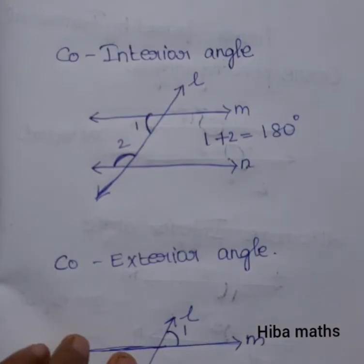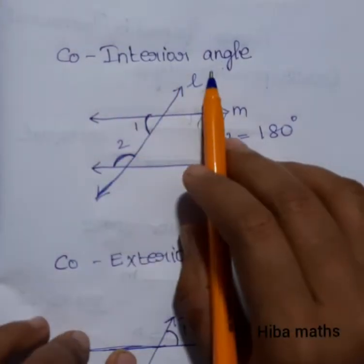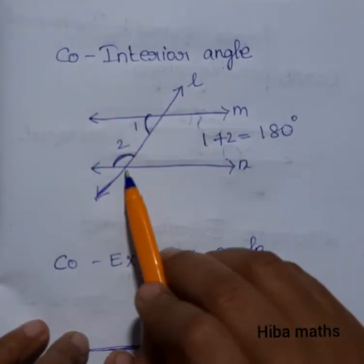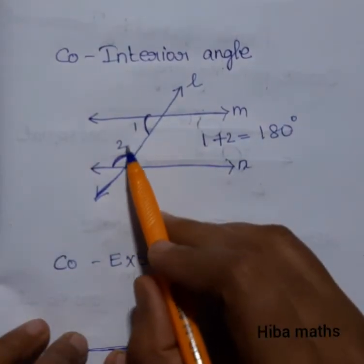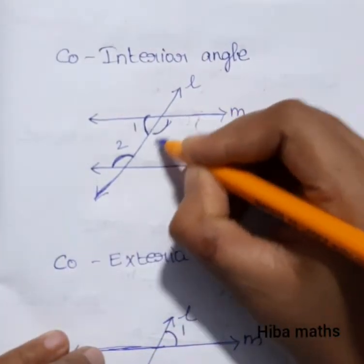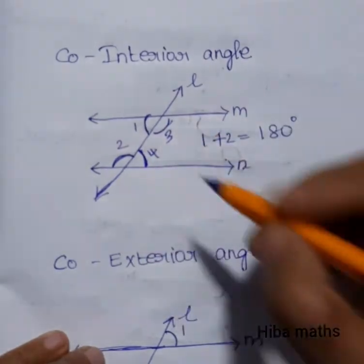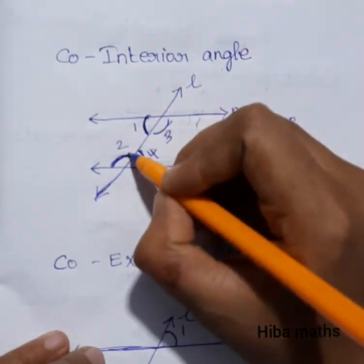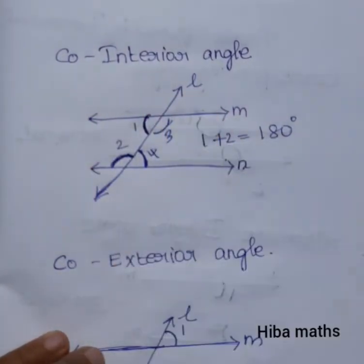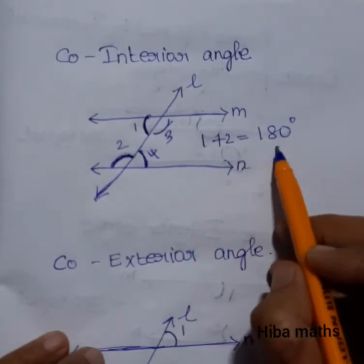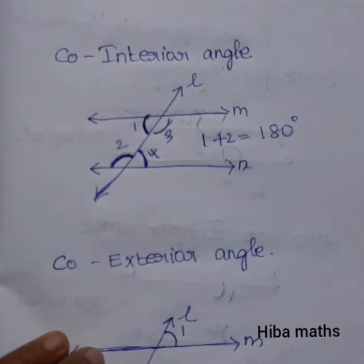Next is co-interior angles. Interior means inside the parallel lines. Co-interior means both angles are on the same side — for example, both on the left side. They are in the same direction. If we add the two co-interior angles together, the answer is 180 degrees. That is very easy and simple.